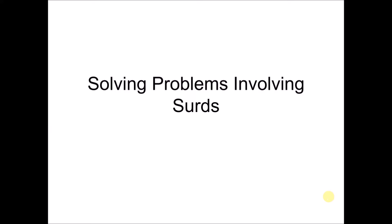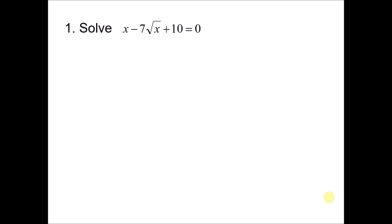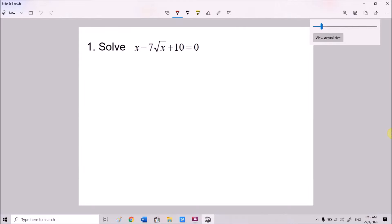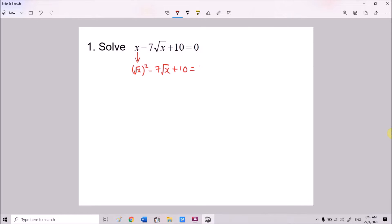So we look at the first example question: solve x minus 7√x plus 10 equals 0. In order to solve this, you have to understand that even though x is given here, we can see this as the square of the square root of x — the square root and the square cancel off, giving you x. So we have (√x)² minus 7√x plus 10 equals 0.